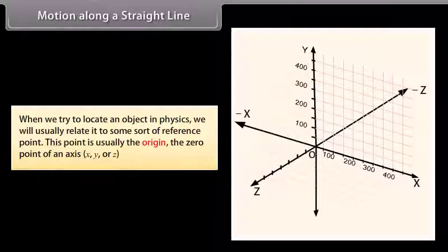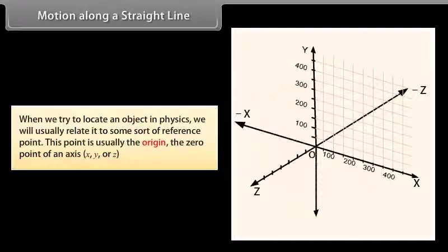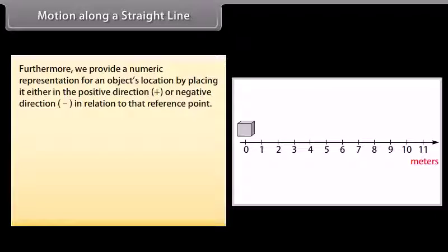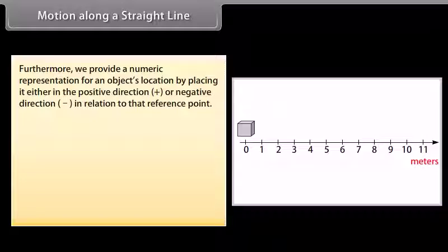When we try to locate an object in physics, we usually relate it to some sort of reference point. This point is usually the origin — the zero point of an axis: X, Y, or Z. We provide a numerical representation for an object's location by placing it either in the positive direction or negative direction in relation to that reference point.